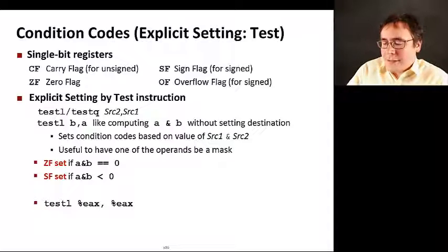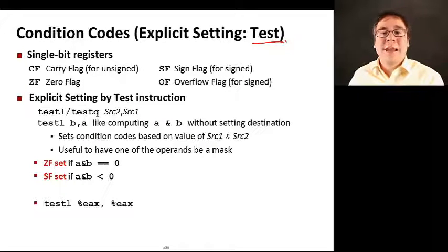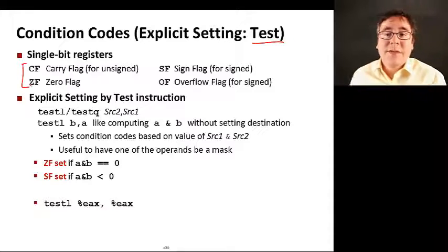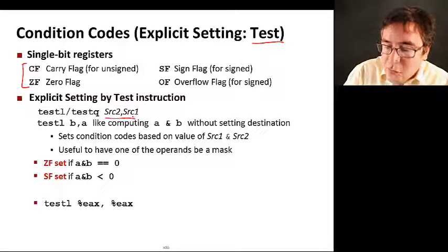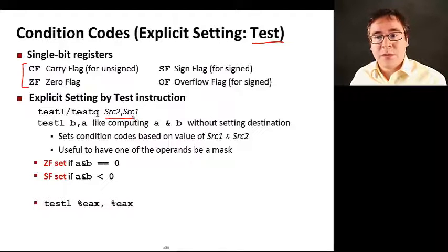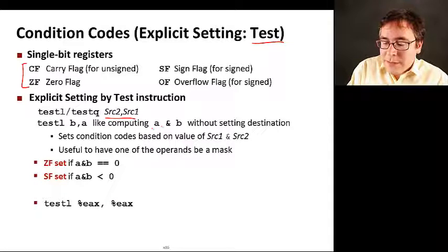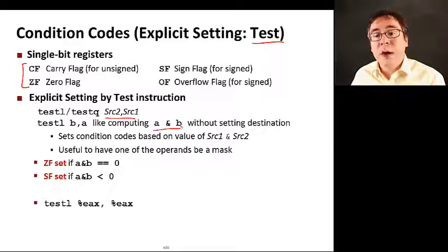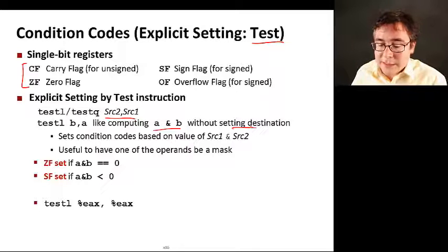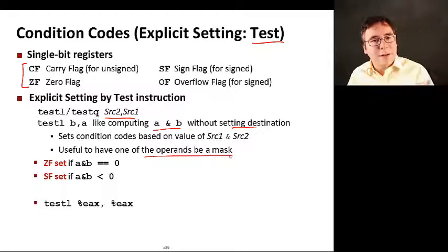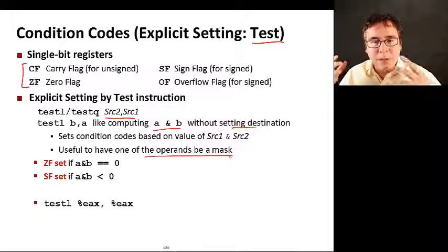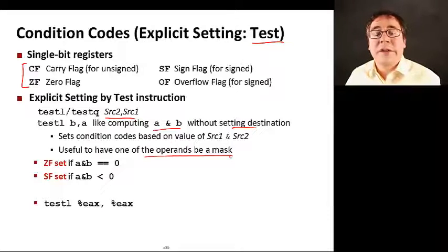Let's see now how to set condition codes with the test instruction. The test instruction also manipulates the same set of single-bit condition code registers. It takes two operands as parameters, source 2 and source 1, and essentially it works like computing a bitwise AND b, a being source 2 and b being source 1, without setting the destination. That's useful to have operands be a mask, because tasks with masks using bitwise AND is normally very useful.